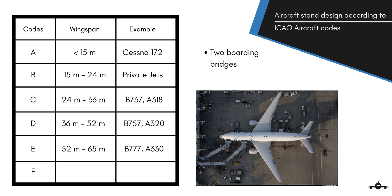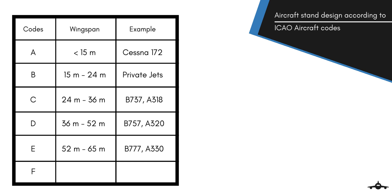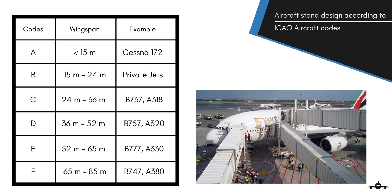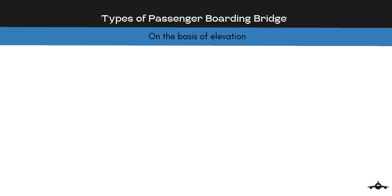Last but not the least, Code F aircraft is the largest aircraft category, such as the Airbus A380 or Boeing 747, with a wingspan of 65m to 80m. They are considered large body aircraft. Their stands can have up to 3 passenger boarding bridges because these aircraft are huge and can easily carry more than 500 passengers.